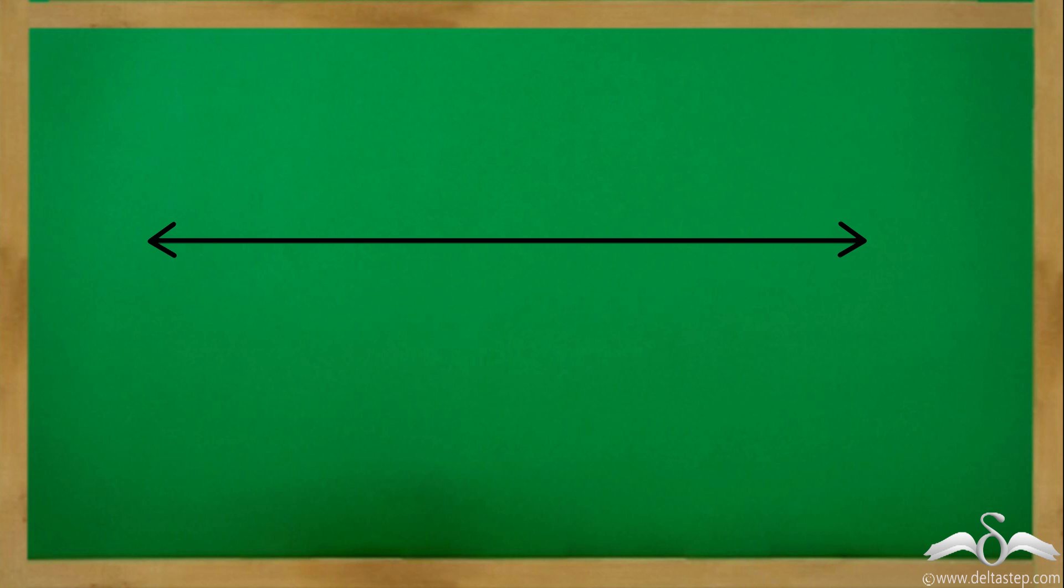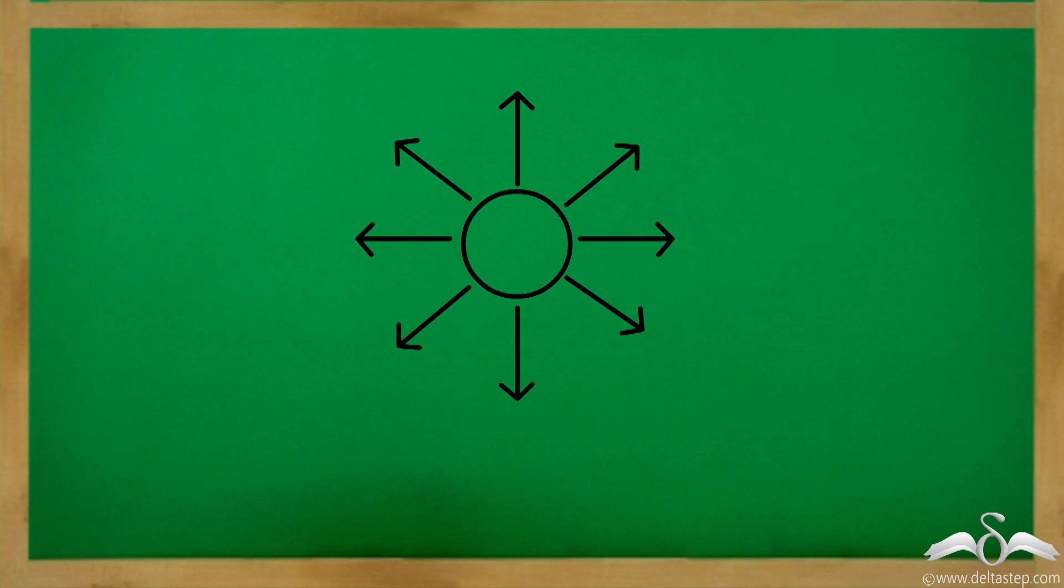Yes, a ray is a part of a line. A ray starts from one point and goes endlessly in one direction. I have heard about sun's rays. Is it the same as the rays you are talking about?